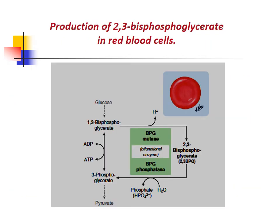Production of 2,3-bisphosphoglycerate in red blood cells: In glycolysis, the intermediate 1,3-bisphosphoglycerate is converted in red blood cells by bisphosphoglycerate mutase to 2,3-bisphosphoglycerate. This is then reconverted back to 3-phosphoglycerate by bisphosphoglycerate phosphatase, after which 3-phosphoglycerate continues through the glycolytic pathway.